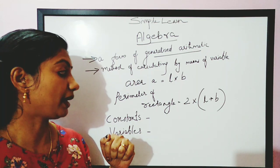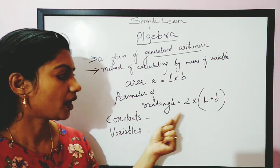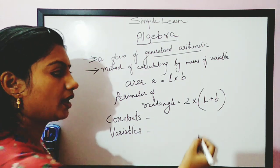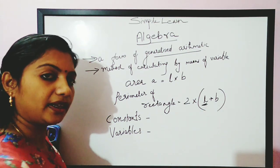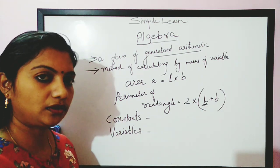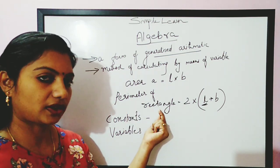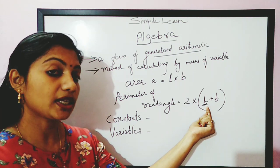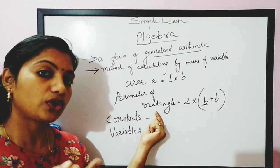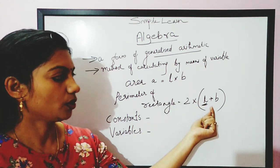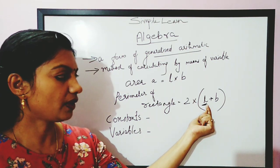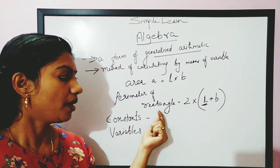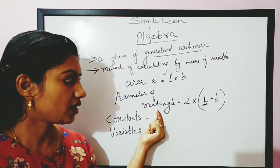Let's look at the perimeter of rectangles: 2 into length plus breadth. If I have length equal to 1, the perimeter of this rectangle is going to be a value. And if I have L equal to 2, that value is going to change. So if I have different values for L or different values for B, the perimeter is going to change.